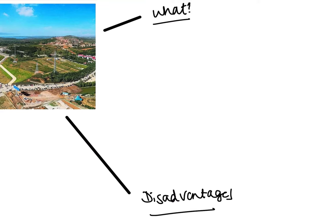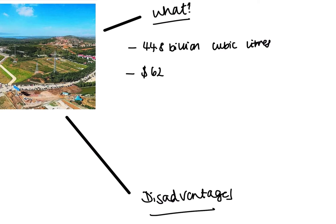The whole point of this project is to transfer some of the water from the south to the north of the country — hence it's called the South-North Water Transfer Project. The aim is to transfer 44.8 billion cubic litres of water from the south to the north. Water security in the north isn't great, so this increases sustainable supply using the surplus water from the south. The project costs 62 billion dollars in total.